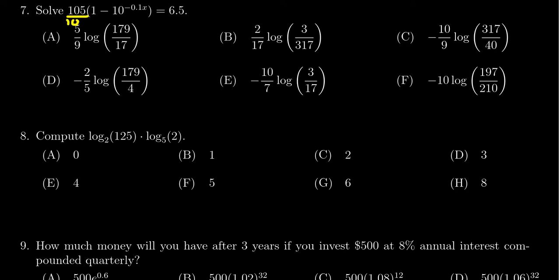So we're going to begin by dividing both sides by 105. And so that's going to give you 1 minus 10 to the negative 0.1x is equal to 6.5 over 105.